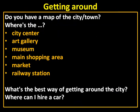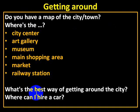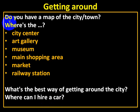Now, 'getting around': if you go to a city, you might ask for a map because you want to know about the different places available. You can say: 'Do you have a map of the city or town?' 'Where is the city center?' 'Where can I find an art gallery, museum, main shopping area, markets, or railway stations?' You can also ask: 'What is the best way of getting around the city?' 'Where can I hire a car?'